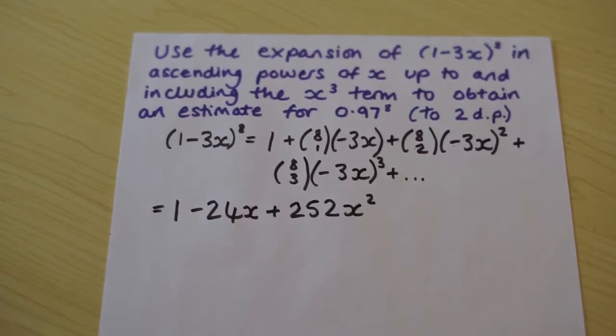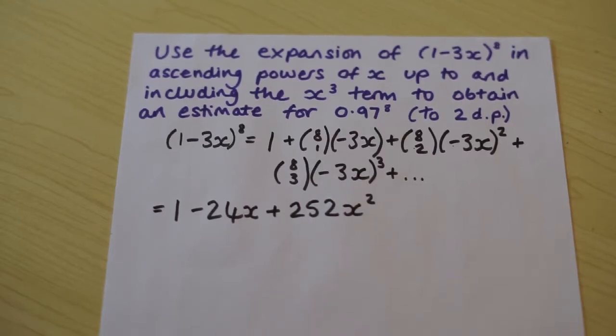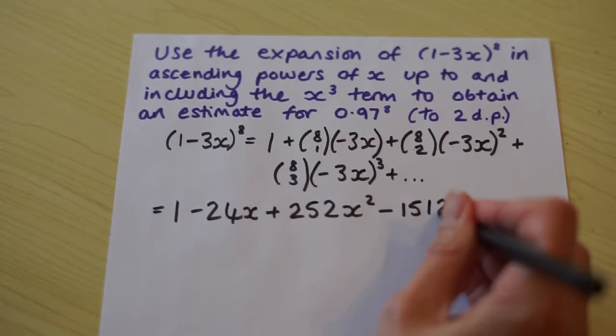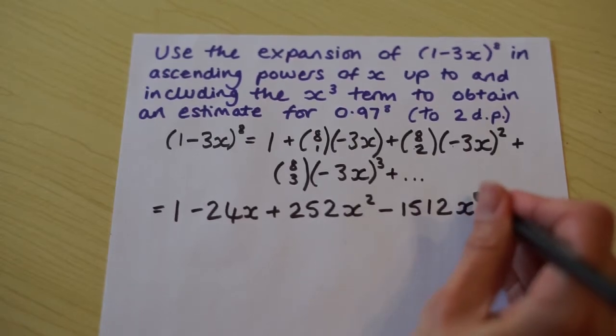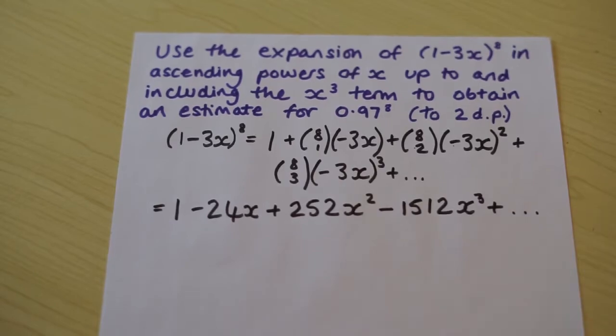Okay, the next one. We've got 8 choose 3, which is 56. We've got minus 3 cubed, which is minus 27. We've got minus there. So 56 multiplied by 27 now, because we've got the minus sign there. That's minus 1512 x cubed. Okay, so we've expanded it. So that's the first part of the problem. We've expanded the bracket.